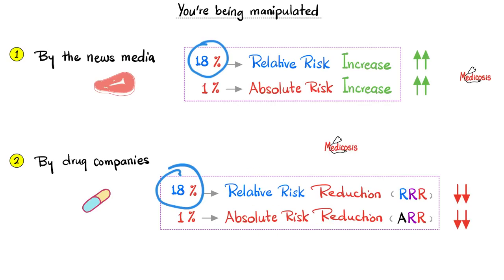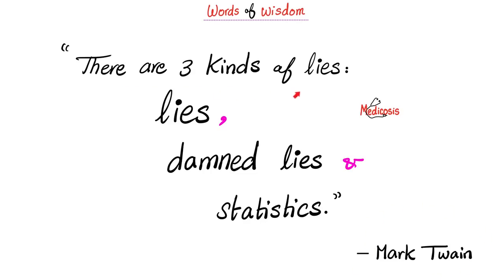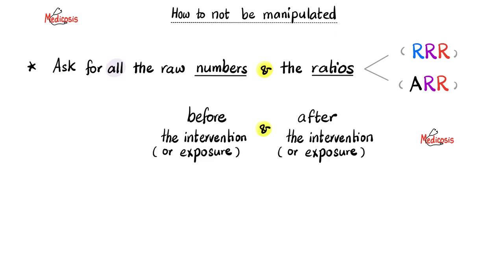That's why you should never forget that there are three kinds of lies: lies, damned lies, and goddamn statistics. In order not to be manipulated by the news media or by corporations, ask for all the raw numbers and all the ratios — relative risk reduction and absolute risk reduction — before the specific intervention or exposure and the numbers after. Trust nobody.